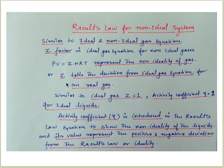This is Raoult's law for non-ideal liquids. Similar to ideal and non-ideal gas equations — we have PV = nRT for ideal gases. When we want to use the ideal gas equation for non-ideal gases, we insert a compressibility factor Z, which tells the deviation from ideality for any real gas. For ideal gases, Z is equal to one. Similarly, we insert another coefficient — the activity coefficient gamma — into Raoult's law, and it becomes the modified Raoult's law for non-ideal liquids.